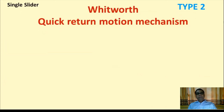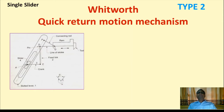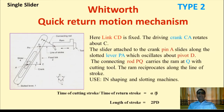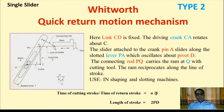Type 2 of the single slider is the Whitworth Quick Return Motion Mechanism, which is a modification of the previous mechanism. Here, link CD is fixed, the driving crank CA rotates about C, and the slider attached to crank pin A slides along the slotted lever PA, which oscillates about pivot D. The connecting rod PQ carries the RAM at point Q with a cutting tool, and the RAM reciprocates along the line of stroke. Application is in shaping and slotting machines.